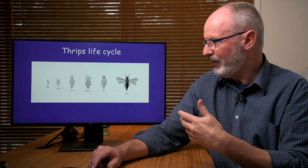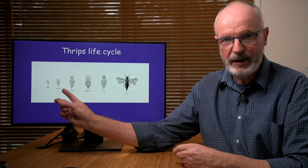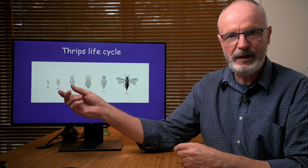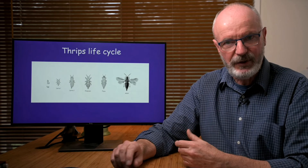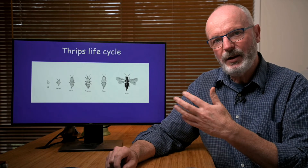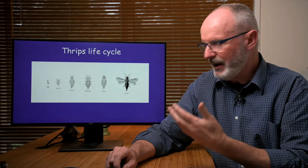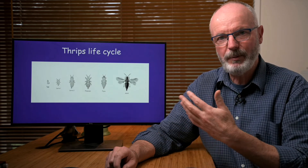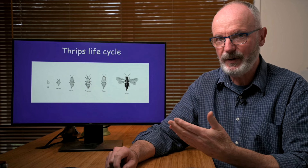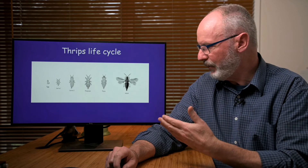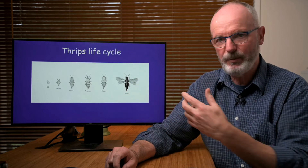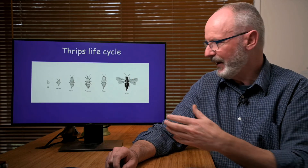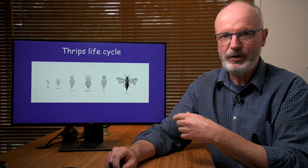From the egg hatches a first instar larva, which immediately begins feeding — they are also sapsuckers — which molts and becomes a second instar larva. Then it all changes. After the next molt the insect becomes a pre-pupa and stops feeding. After the next molt it becomes a pupa. With these two pupal forms you can see wing buds, and eventually an adult will form after the last molt.